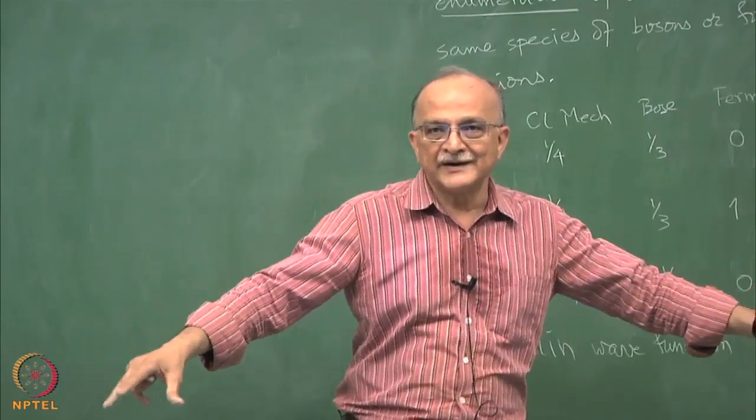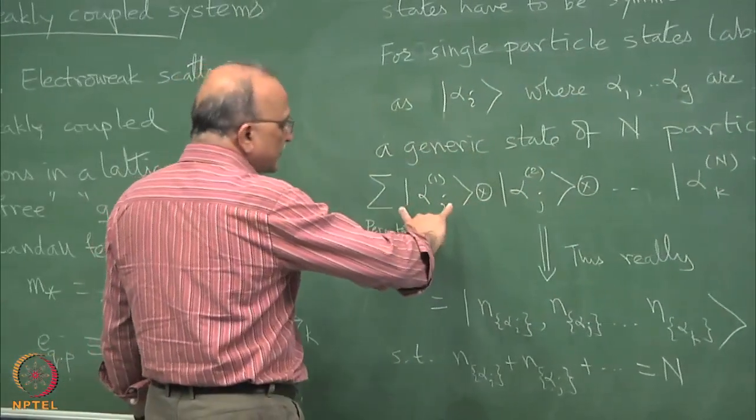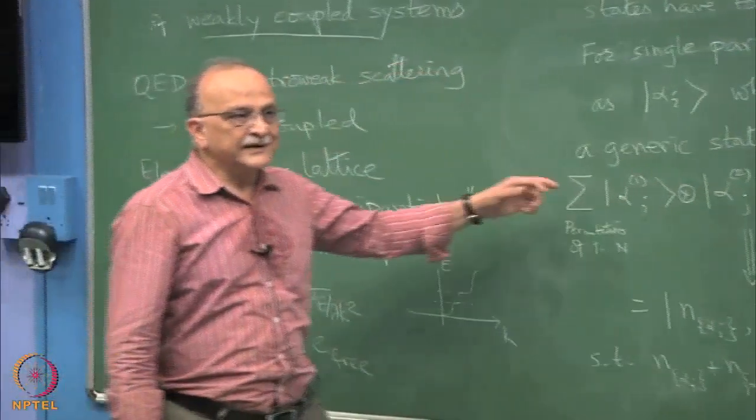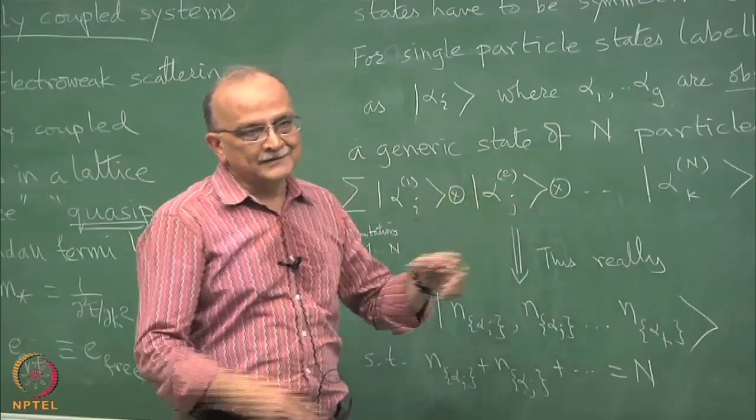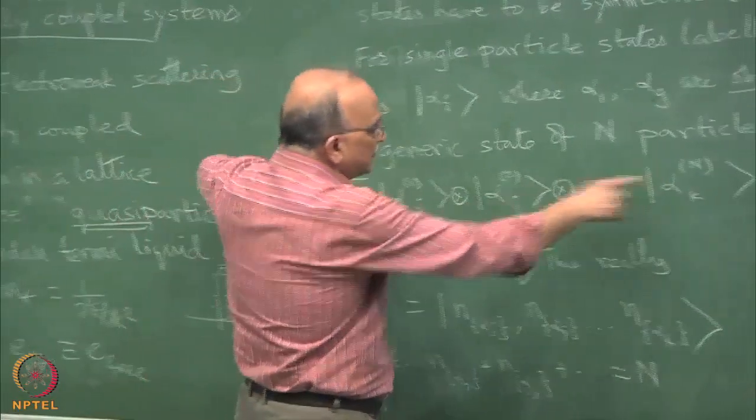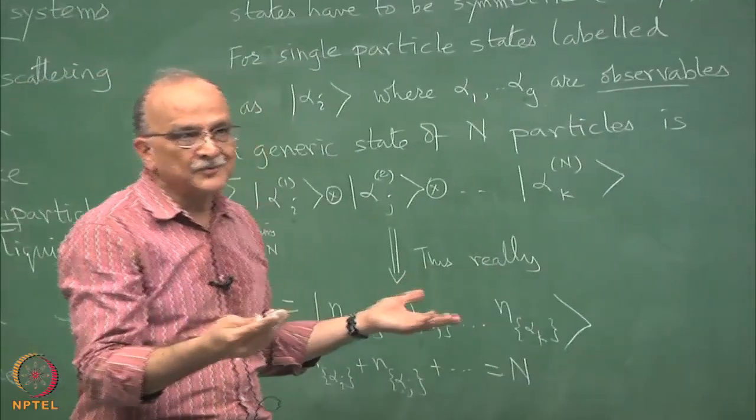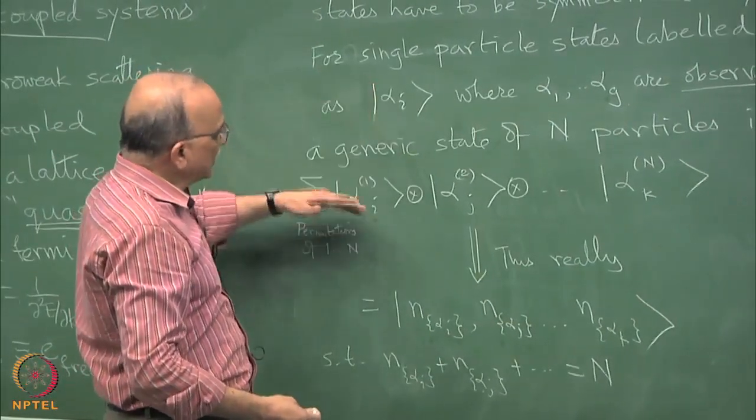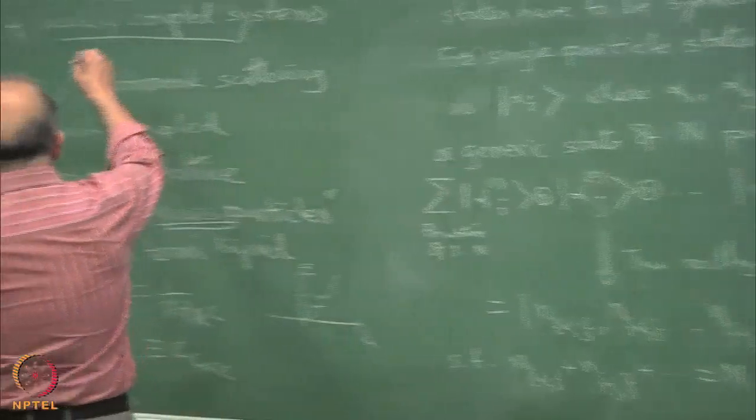This cross product where we take 1 particle states and then string them together to make more is really a mathematical device. If I did not have this summation, this has no physical meaning because if it is unsymmetrized then it has no meaning, it is not a physical state. So the fact that we can fall back on single particle states to string together a many particle state has to do with this weak coupling.